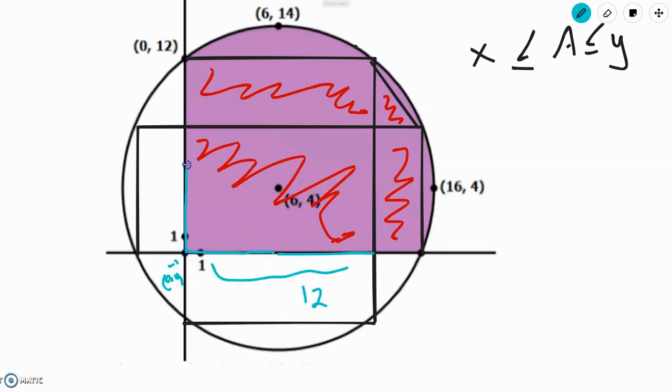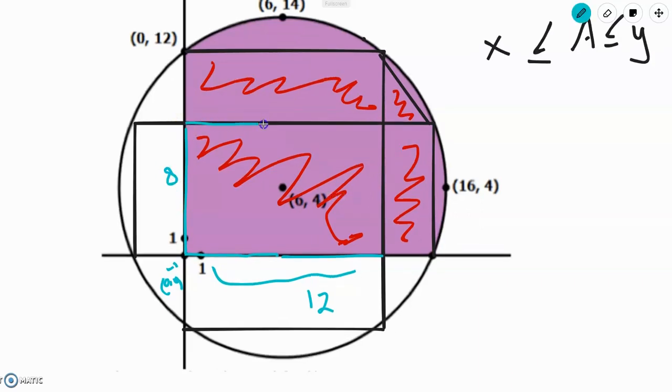Similarly, the length of this segment is 8, and so this length over here is also 12, since it's a rectangle, while this length is also 8.